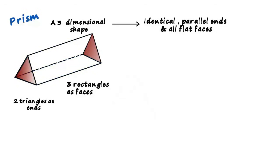Now we look at the definition. It says that the ends are identical and parallel. They are identical since both are triangles, and both the triangles are parallel to each other.